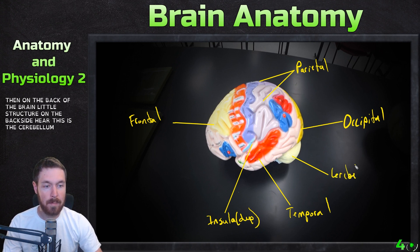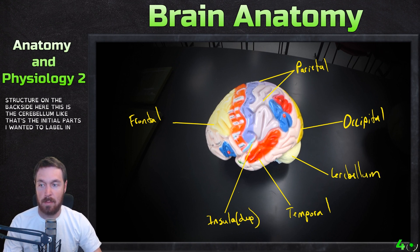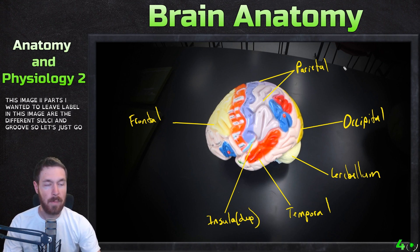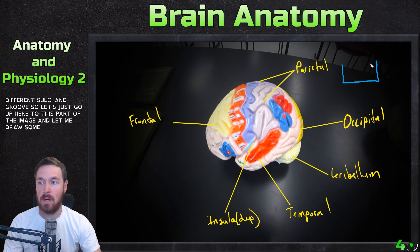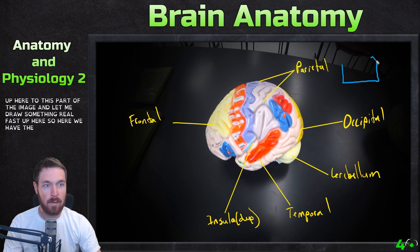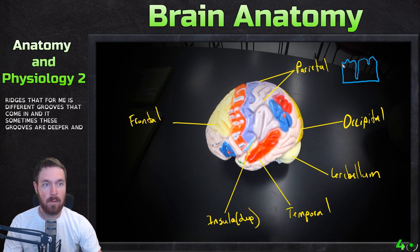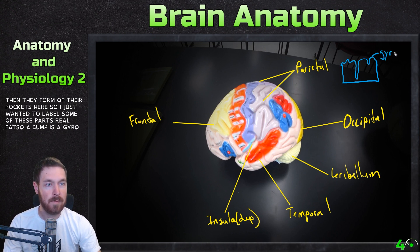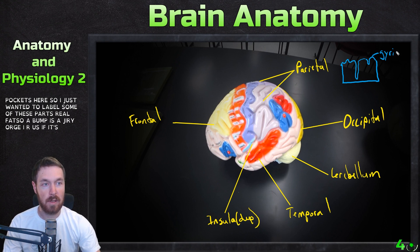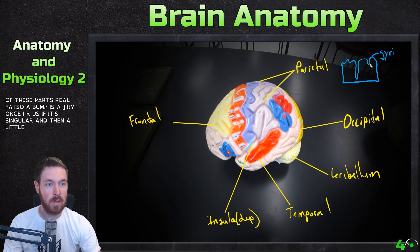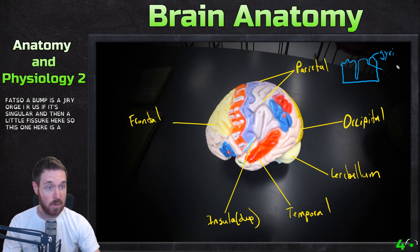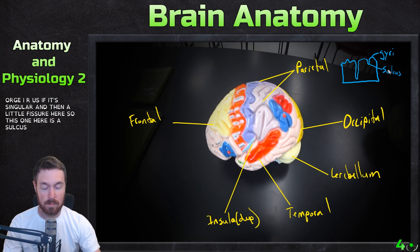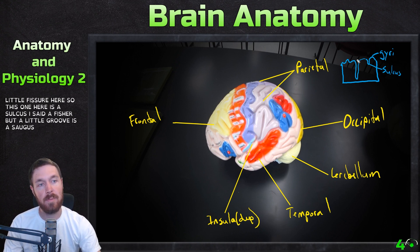Now let's label the different sulci and grooves. Up here we have ridges that form grooves, and sometimes those grooves are deeper and form larger pockets. A bump or ridge is called a gyrus — or gyri in the plural. A shallow groove is a sulcus, while a deep groove is a fissure.